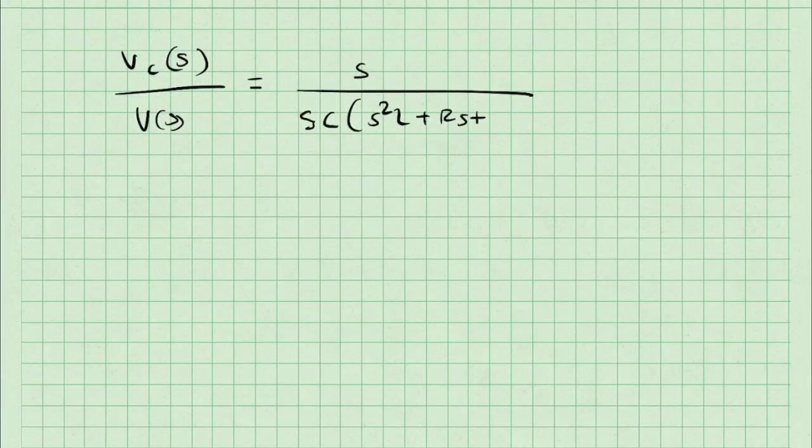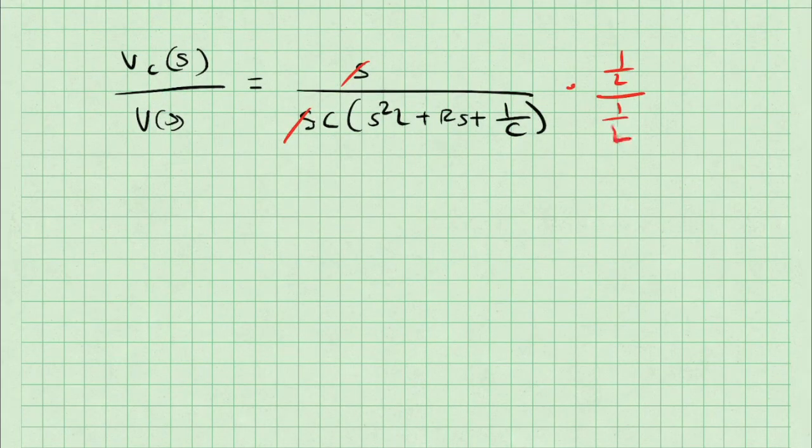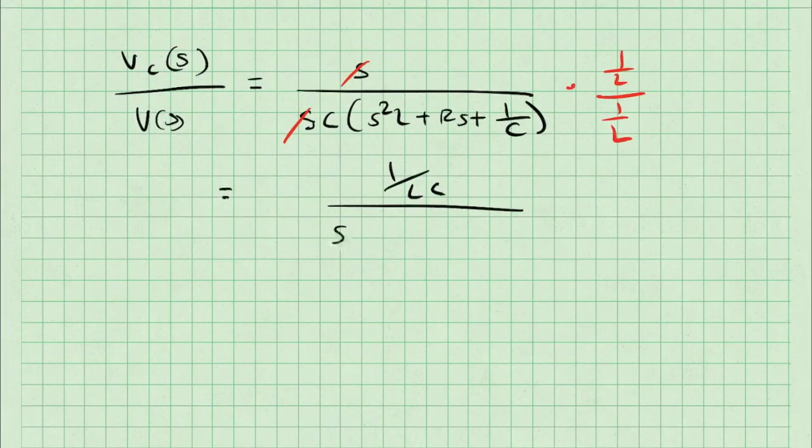Secondly, because I would like my denominator to start with a coefficient of 1, I'm going to divide through by L on both the top and bottom of my fraction. This leaves me with a transfer function, 1 over LC divided by S squared plus R over L S plus 1 over LC. And now you've found your first transfer function of a circuit.